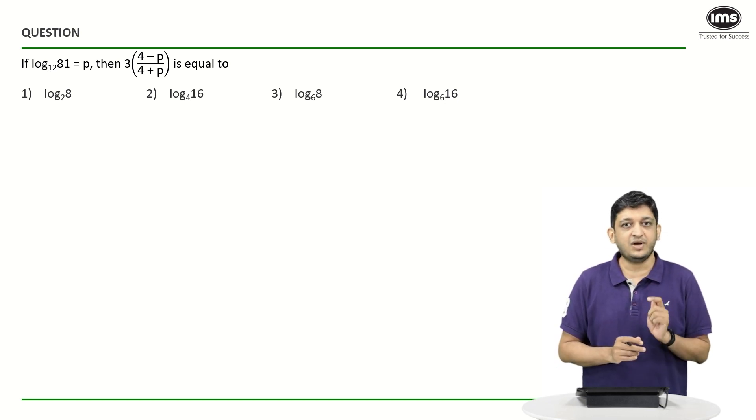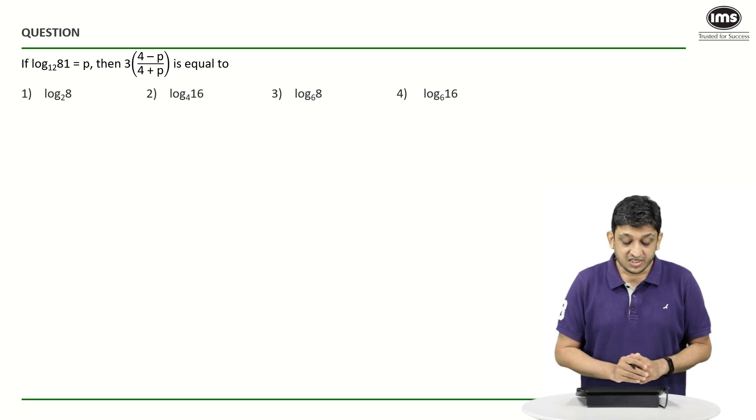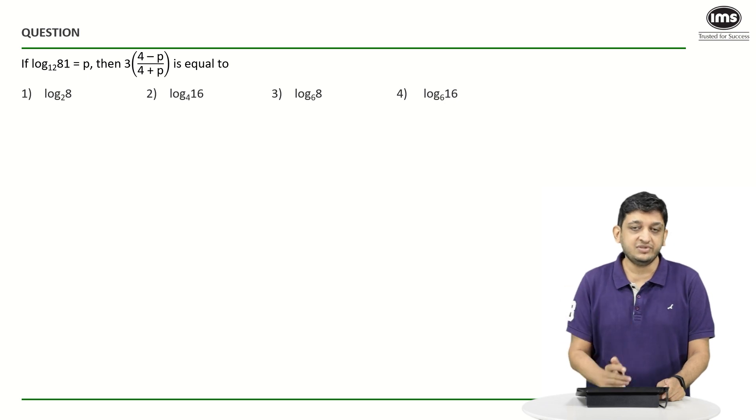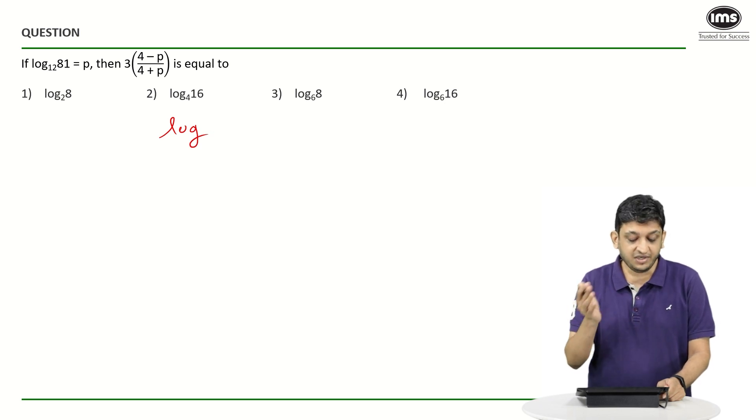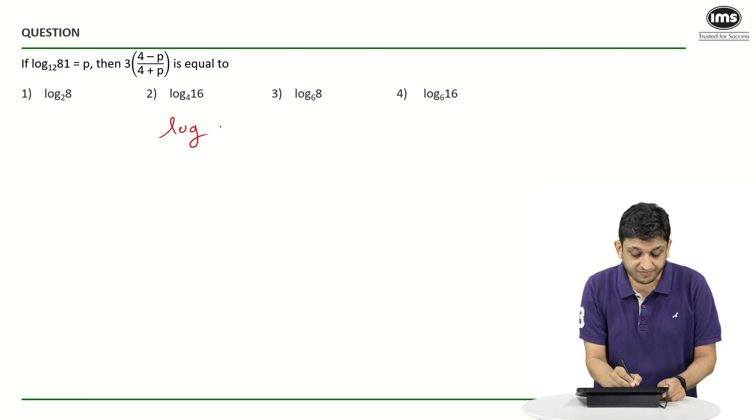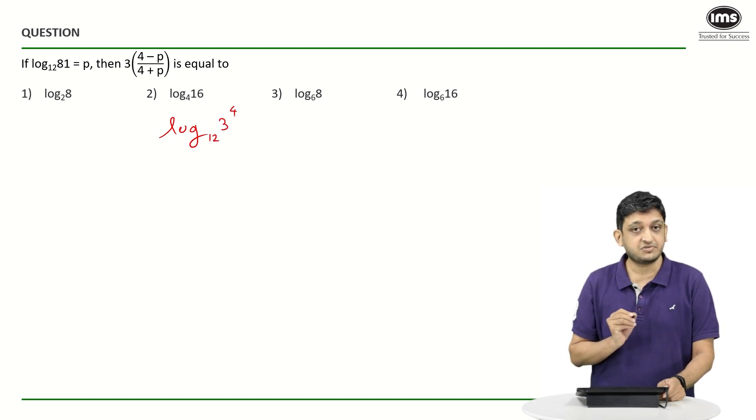We will go about solving the question in the usual manner. Just that we can pay attention to one small bit and can shorten our problem solving process. Let us understand what is this log 81 to the base 12. The first thing that we can do here is we can write this number as log of 3 raise to 4 to the base 12.